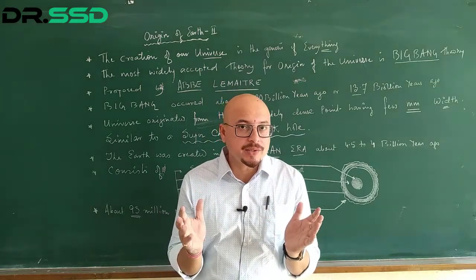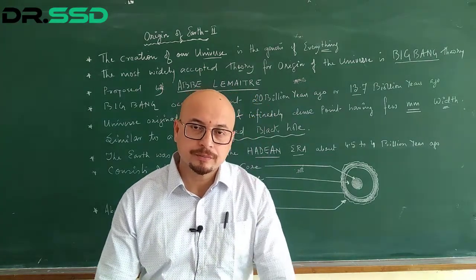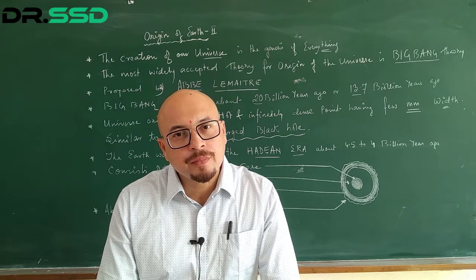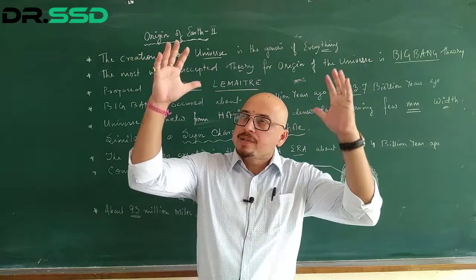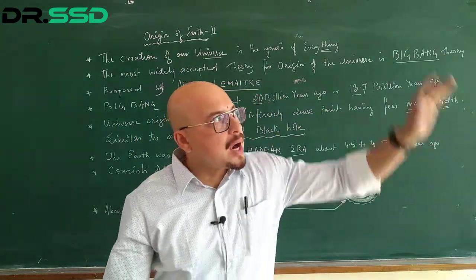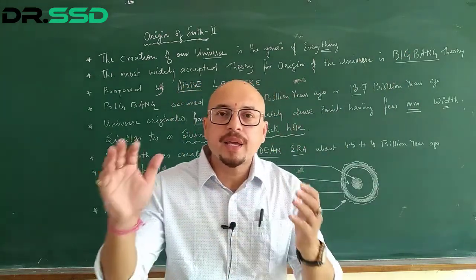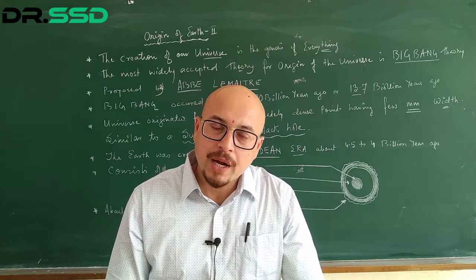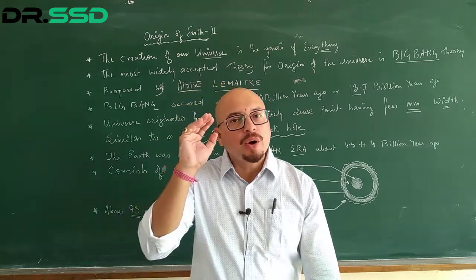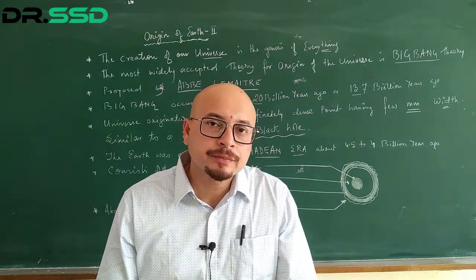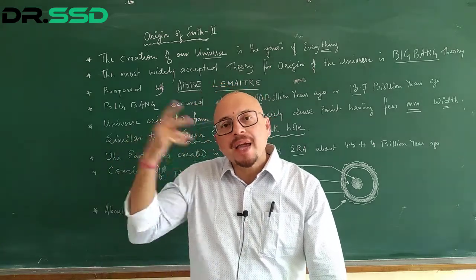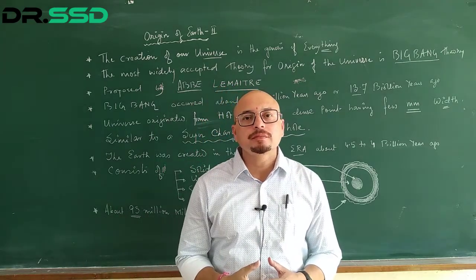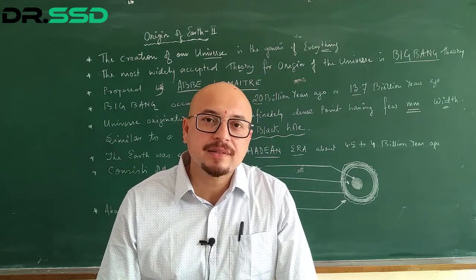Had there been no such pockets of hot primordial soup on earth, life wouldn't have originated. It is presumed that as rain started pouring down, ultraviolet radiation from the sun began breaking water vapor into oxygen and hydrogen. This oxygen was very highly reactive — nascent oxygen. Two nascent oxygen atoms combined to form O₂, and three nascent oxygen atoms combined to form the life-protecting gas ozone, O₃.